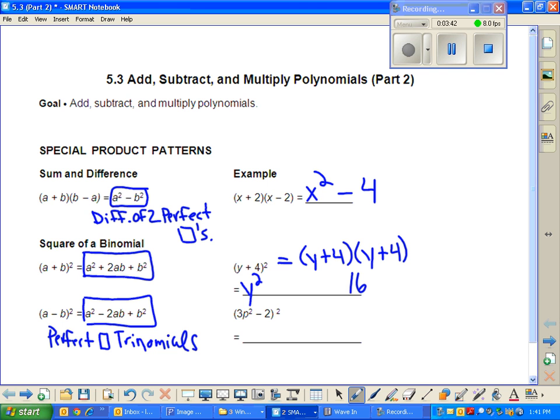In between, it's just 2 times the first times the last, or 2 times Y times 4. 2 times Y times 4, that's going to be 8Y. And because these were all plus signs, both of those signs are plus signs.